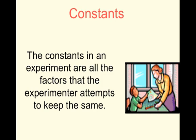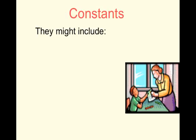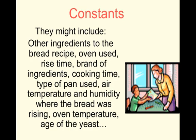We call all the other variables constants because we're keeping them the same. The constants in an experiment are all the factors that the experimenter attempts to keep the same. Can you think of some of the constants for this experiment? They might include all the other ingredients in the bread recipe, the same oven, the amount of time you allow the bread to rise, the brand of ingredients, the cooking time, the type and size of pan, the air temperature and humidity while making the bread, where the bread is left to rise, oven temperature, and even the age of the yeast. If you don't keep them the same for every loaf of bread, you're not running a controlled experiment.